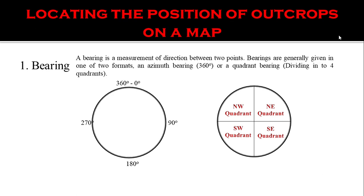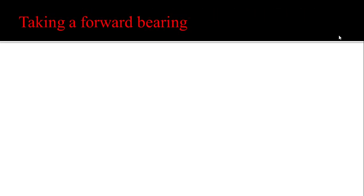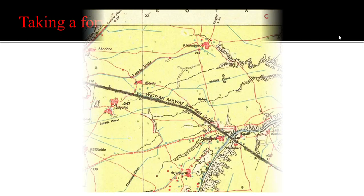We will go with azimuth bearing, which is quite easy to use in the field. The next method of positioning ourselves is using GPS. In bearing, it can be classified into two: forward bearing and backward bearing. For forward bearing, by standing on a known point, we have to look in the direction of the unknown location.